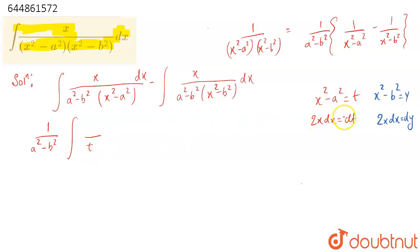Since 2x dx = dt, x dx = dt/2. So this is dt/t with 1/2 common, minus the integral with 1/2 common, which is dy/y.